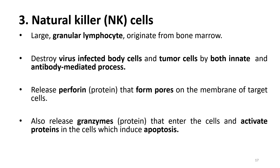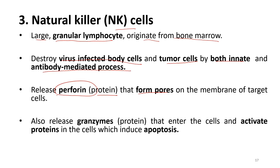The third type of internal defense is the natural killer cell, or NK cell. NK cells are large, granular lymphocytes that originate from bone marrow. They destroy virus-infected body cells and tumor cells through both innate and antibody-mediated processes. NK cells release perforin, a protein that forms pores on the target cell membrane, and granzymes, proteins that enter the cell and activate caspases to induce apoptosis.